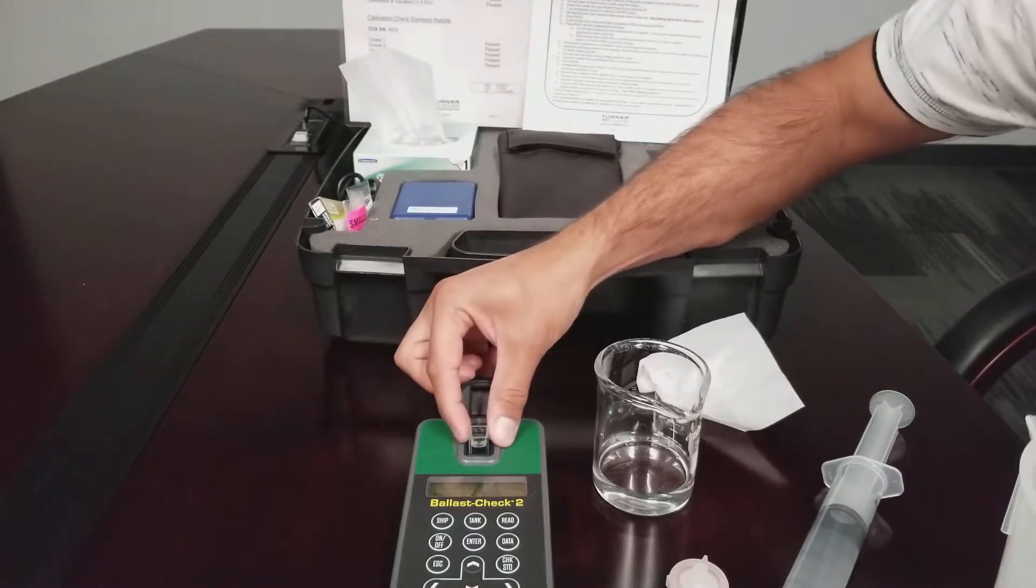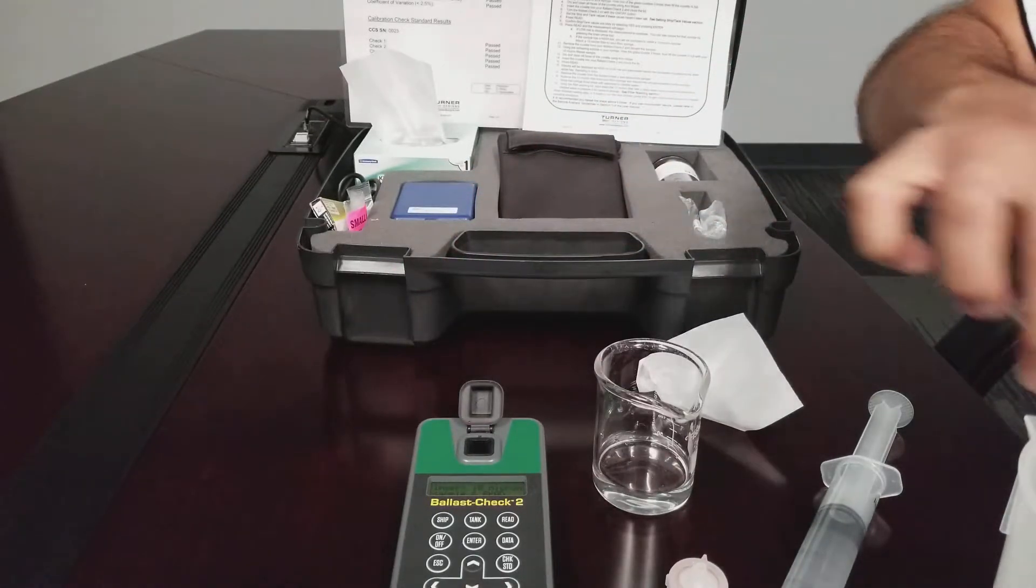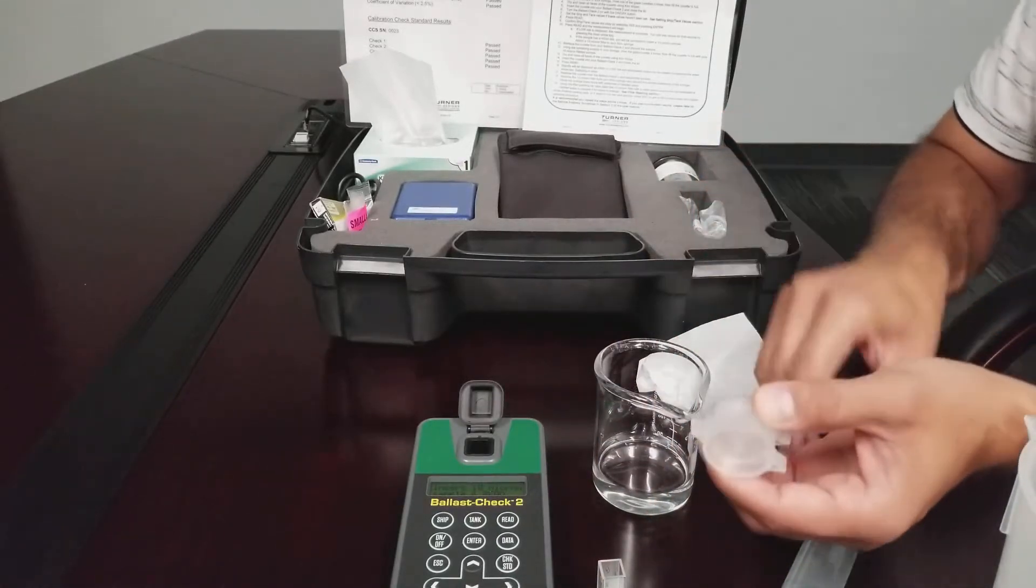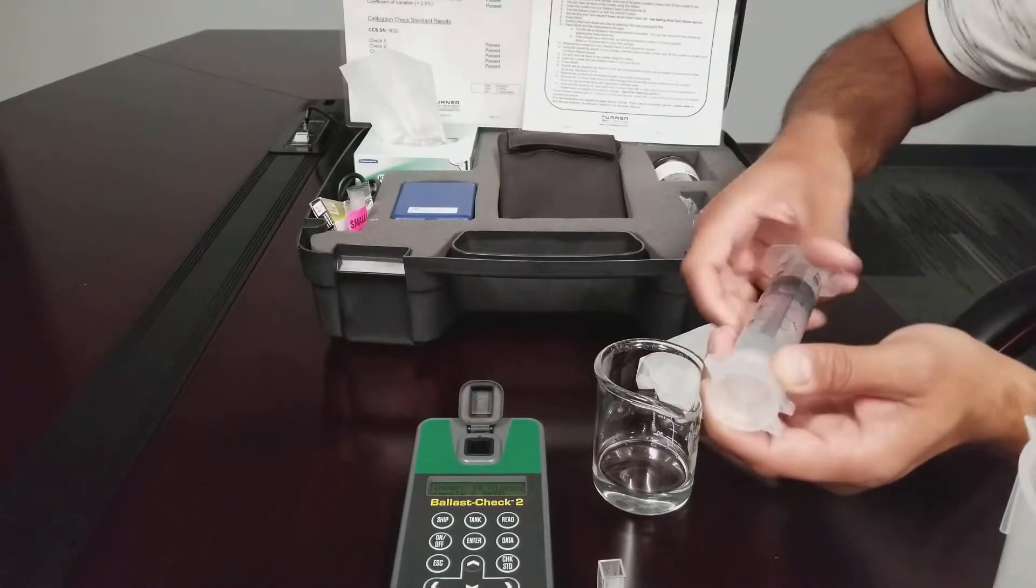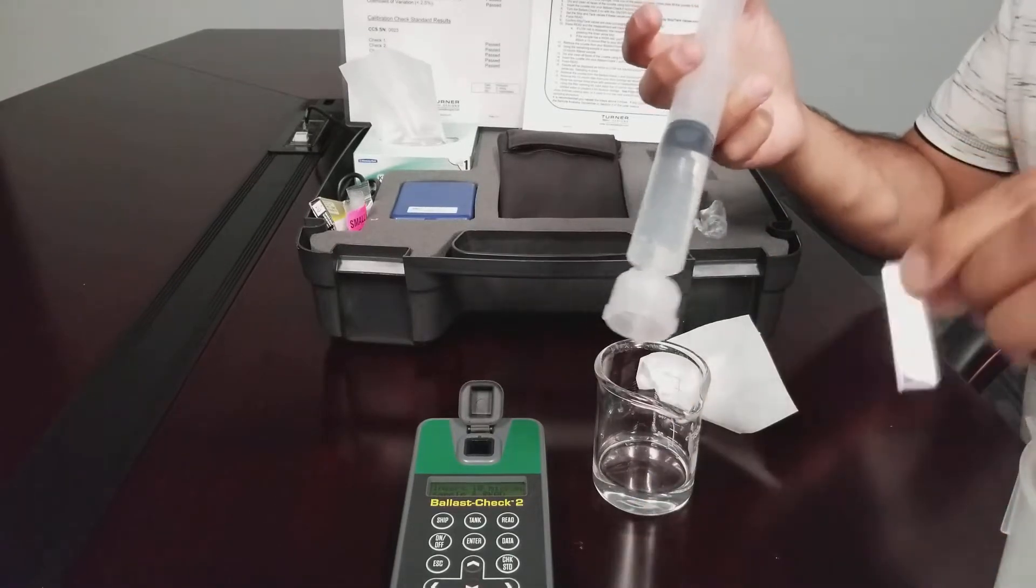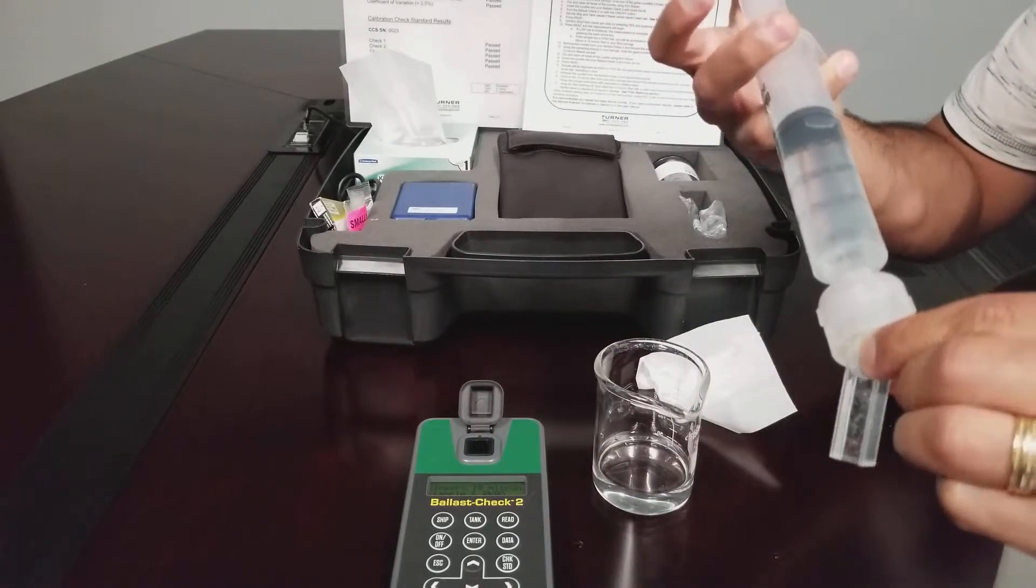Remove the cuvette from the sample compartment and discard the sample. Obtain a 10 micron filter and attach it to the end of the 60 cc syringe, and rinse your cuvette three times with your filtered sample.